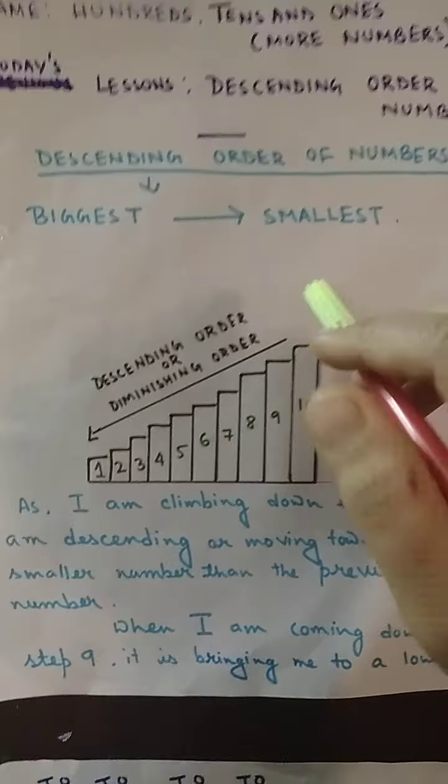So how do we arrange in descending order? First, I have to compare the numbers in the 100s place. Then I have to compare the numbers in the 10s place. If the 100s place digits are the same, then we check the 10s place. And if the 10s place is also the same, then we finally check the 1s place to compare the numbers. I have set a few examples for you.